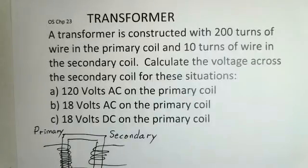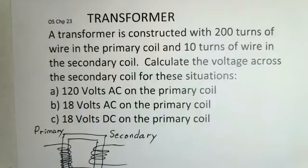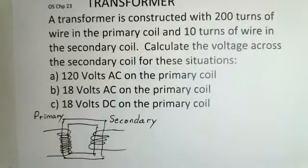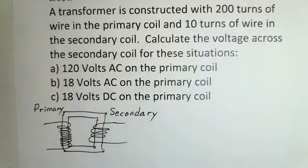We're going to construct this transformer with 200 turns of wire in the primary coil, 10 turns of wire in the secondary coil. We want to calculate the voltage across the secondary coil for three different situations.